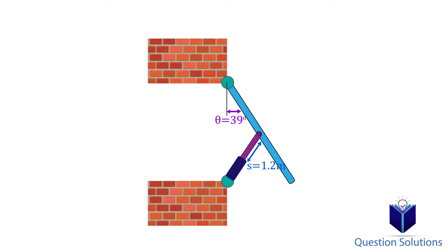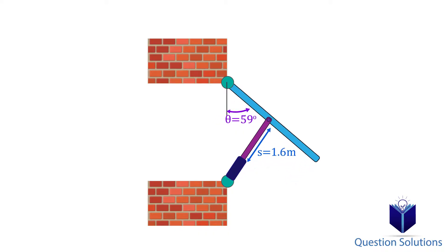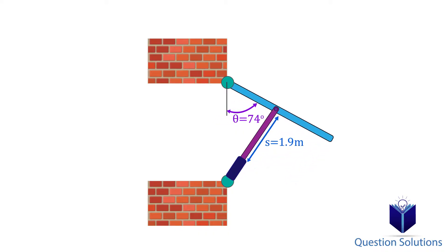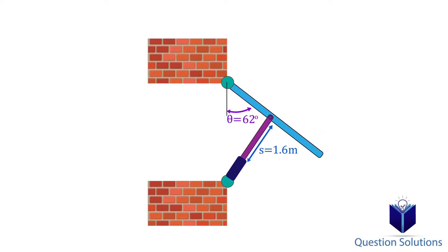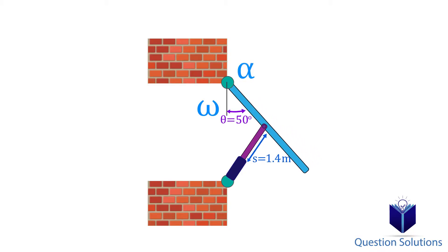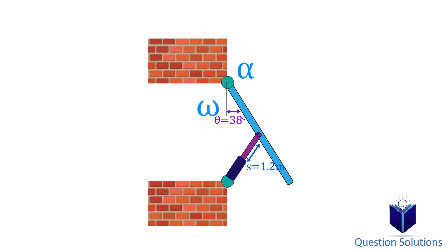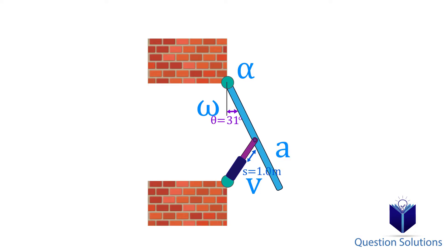In simple terms, one piece of the system will be moving in a circle and another piece will be going in a straight line. By relating the two, we can figure out a host of values like angular velocity or angular acceleration simply by knowing the velocity or acceleration of the piece going through translational movement. In simple terms, if we know how fast something is moving back and forth, we can figure out how fast the other piece is rotating, or vice versa.